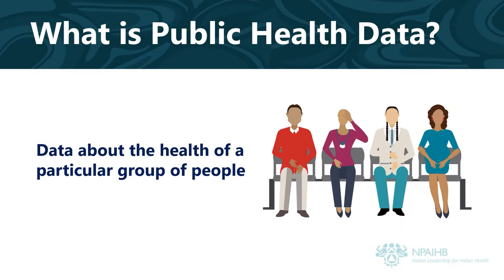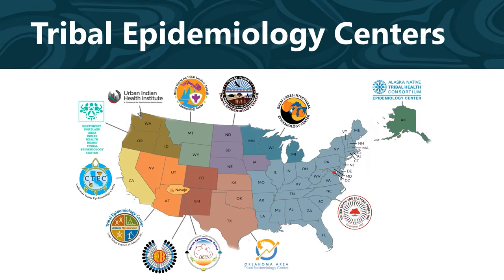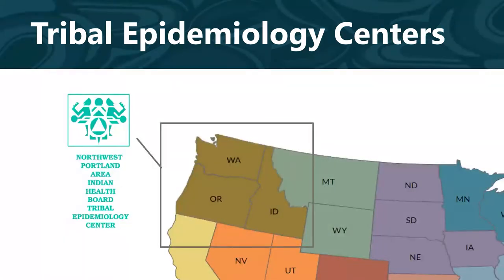A quick note before we move further. When I say health data, what I am really referring to is public health data. Public health data is simply information or data about the health of a particular group of people, such as a tribal community. Tribal epidemiology centers, sometimes called TECs, are full of public health professionals that care for the health and well-being of Native people in their region. For example, the Northwest TEC, one of 12 TECs across Indian country, employs public health professionals that serve the 43 federally recognized tribes in the Pacific Northwest region.